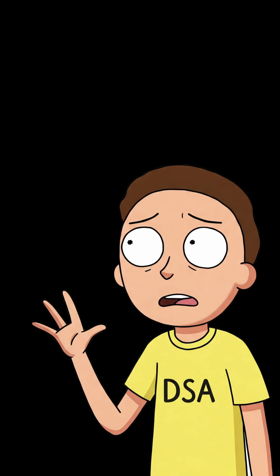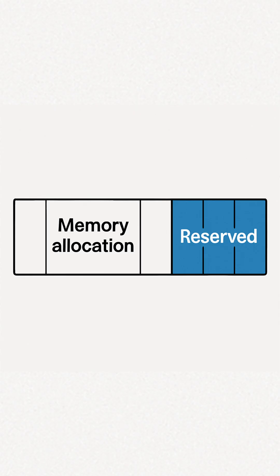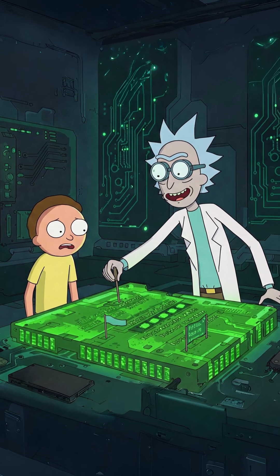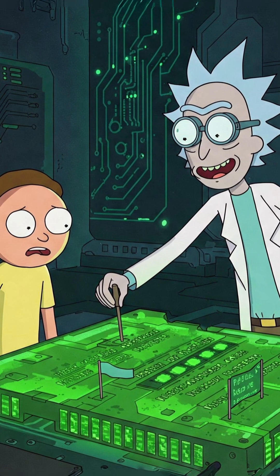But how do they actually work, Rick? Like, where do they exist in the computer? Listen up, Morty, because I'm only explaining this once. When you create an array, you're basically asking the computer to reserve a continuous block of memory addresses. It's like claiming territory in a dimension, except instead of planting a flag, you're just telling the RAM: this is mine now, don't touch it.